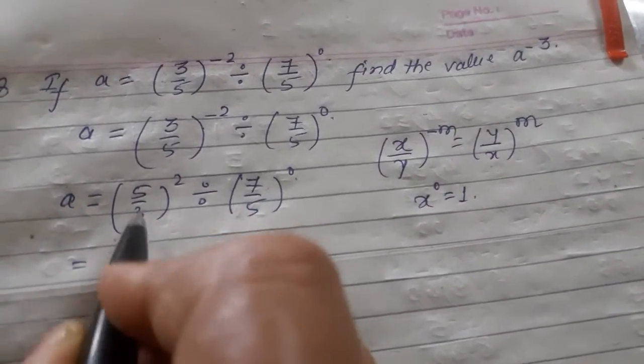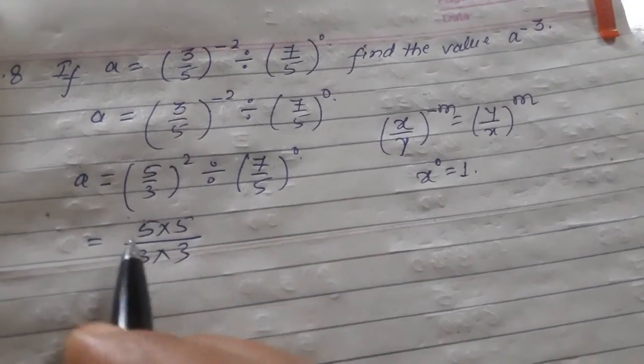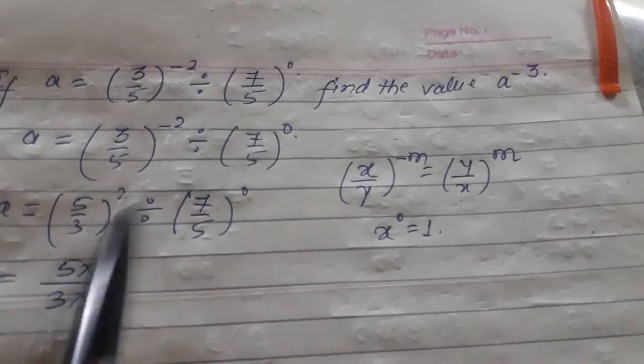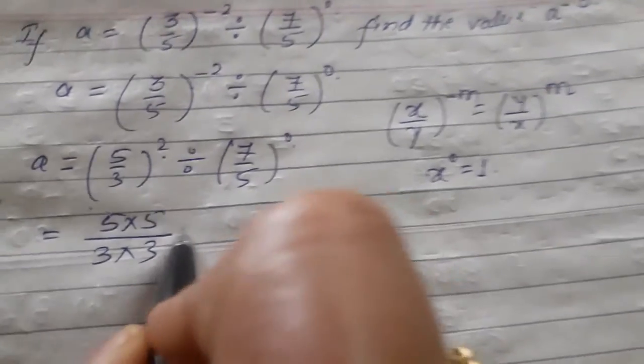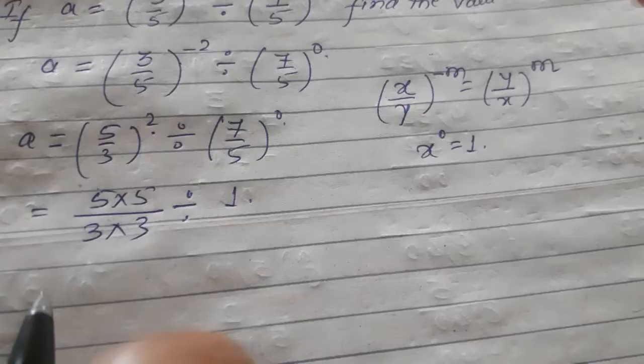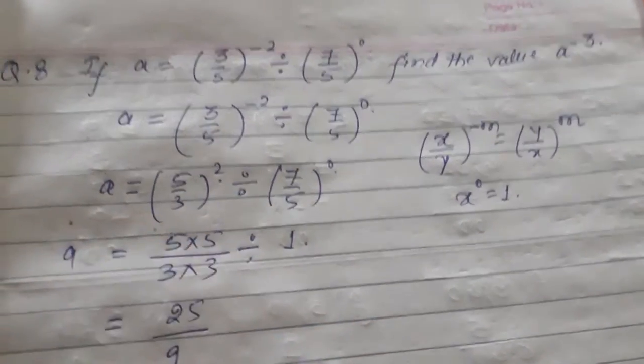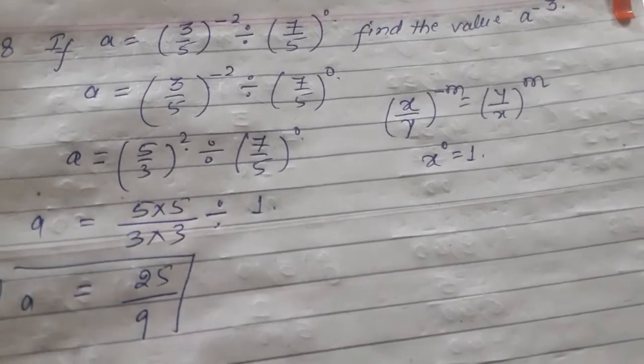So here 5×5/(3×3), why I have written it twice? Because it has the power of 2. Now (7/5)^0, this directly becomes 1. Now it is 25/9, so this is our simple value of a.